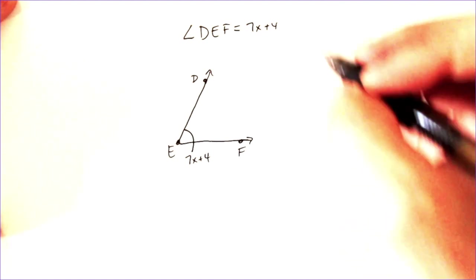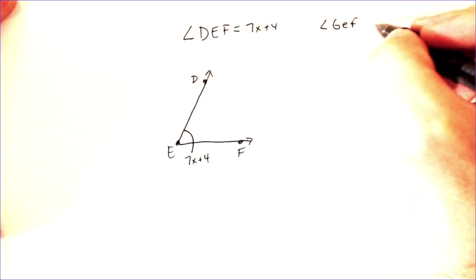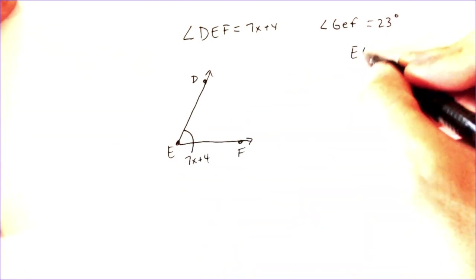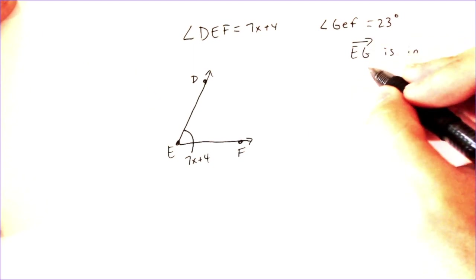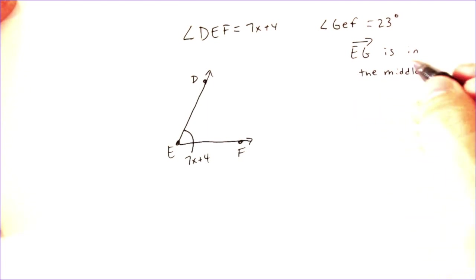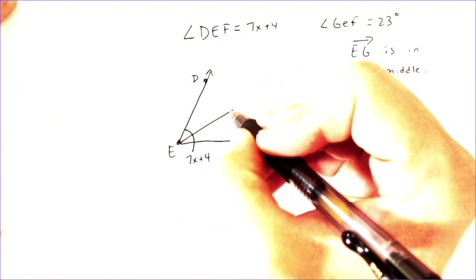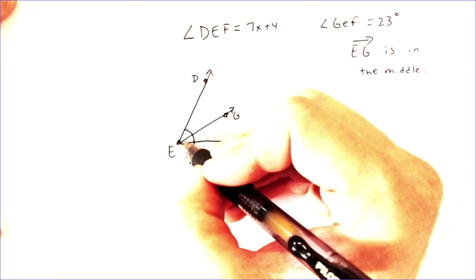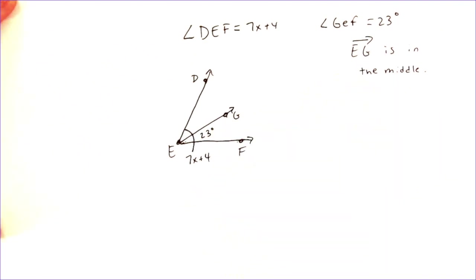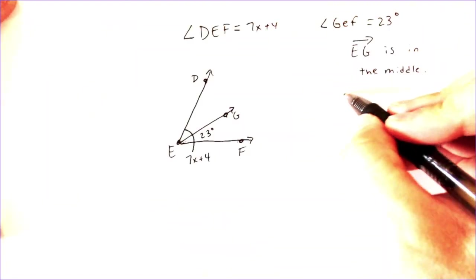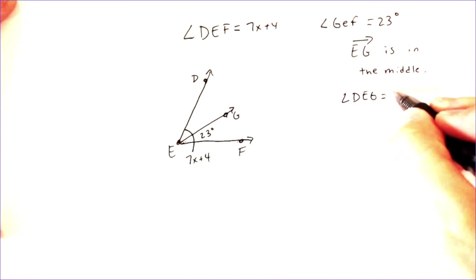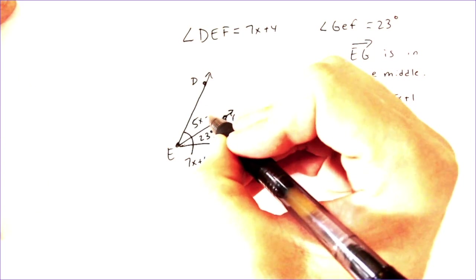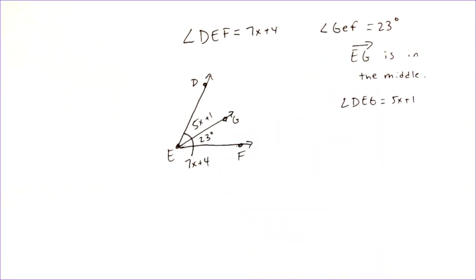Now, I am told some other information. I am told that angle GEF is equal to 23 degrees. And I am also told that EG is in the middle. So, EG, that ray, is in the middle. I shouldn't even say middle, but it's in between and dividing this angle. Okay, so I'm going to draw the G here. And it is a ray. I am putting that arrow there. So, GEF is 23. So, I can label GEF, and I can fill in that 23 degrees.